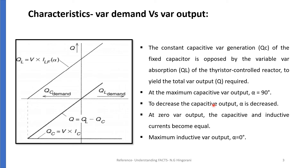At zero delay angle, i.e. alpha equal to zero, the thyristor controlled reactor conducts current over the full 180-degree interval, resulting in maximum inductive VAR output, equal to the difference between the VARs generated by the capacitor and those absorbed by the fully conducting reactor.